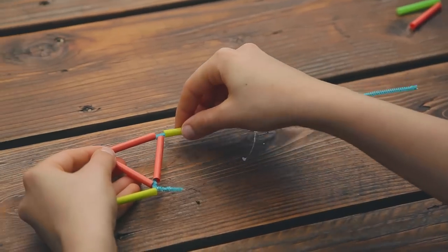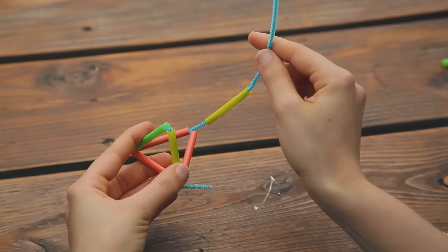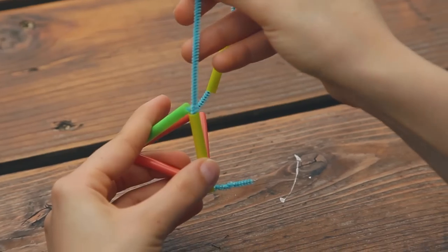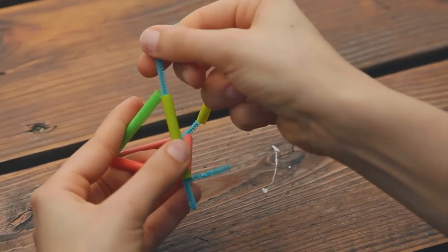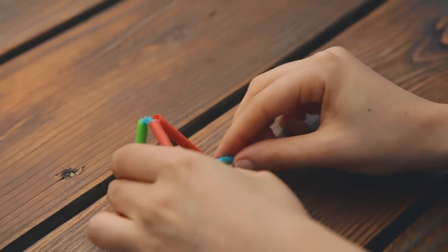Add another straw, then fold up the second triangle you created. Push the pipe cleaner through the straw so it meets with the shorter end. Twist the shorter end around to complete your shape.